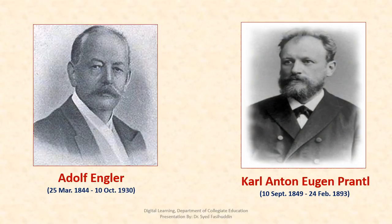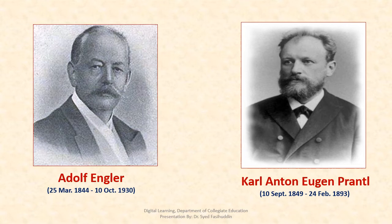Adolf Engler, a German botanist, served as professor of botany at the University of Berlin for about 30 years and as director of botanical gardens. His phylogenetic system of classification was first published as a guide to the botanical garden of Breslau. Later, the system expanded into a monumental work called Die Natürlichen Pflanzenfamilien, covering the identification of genera of the whole plant kingdom. This publication continued with 23 volumes, many supplements, syllabi, and revisions from 1895 to the present day. They classified altogether 303 flowering families, and this great work was completed in collaboration with his associate Eugene Prantl.